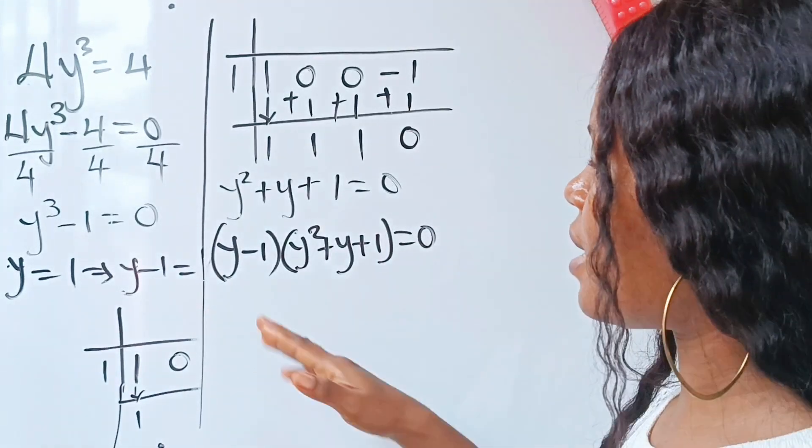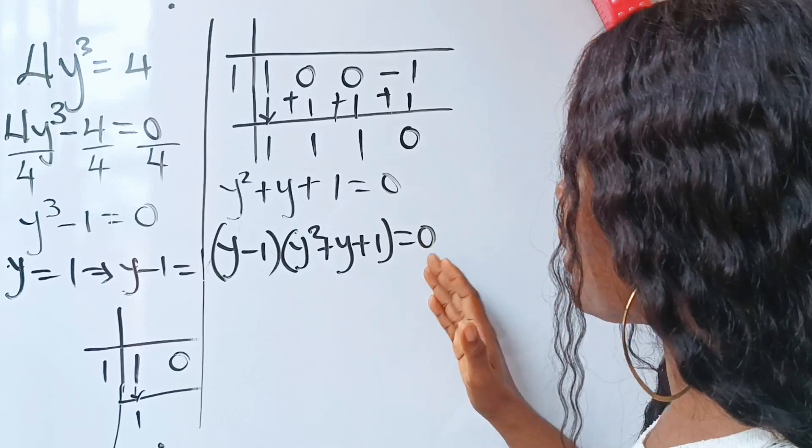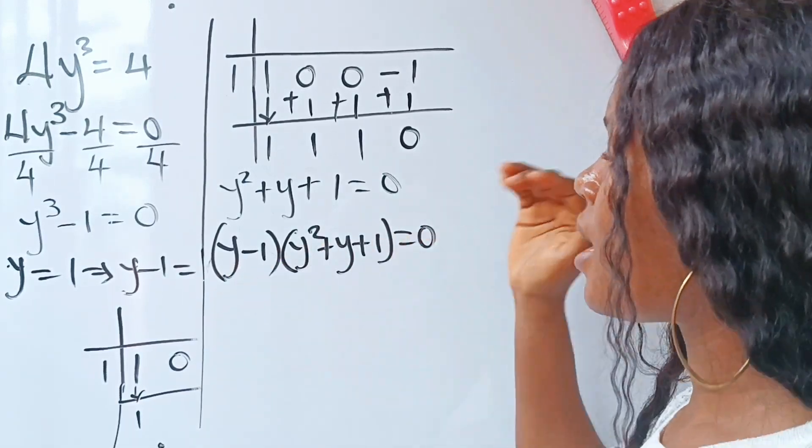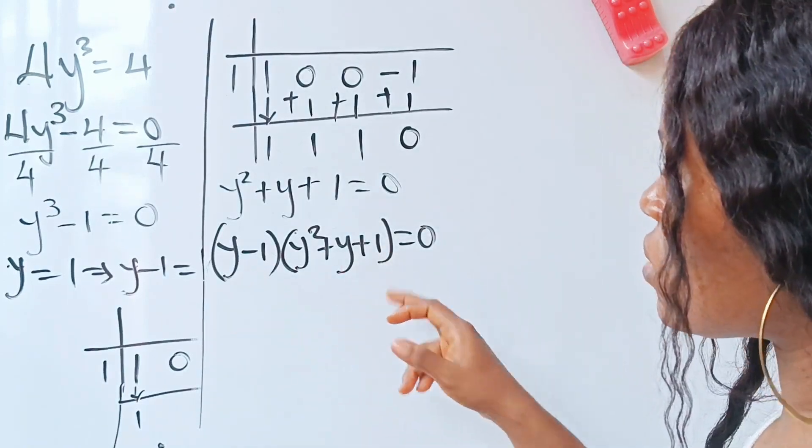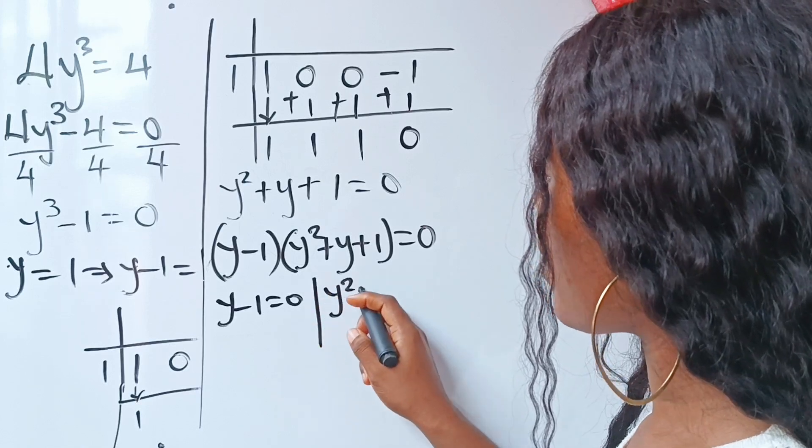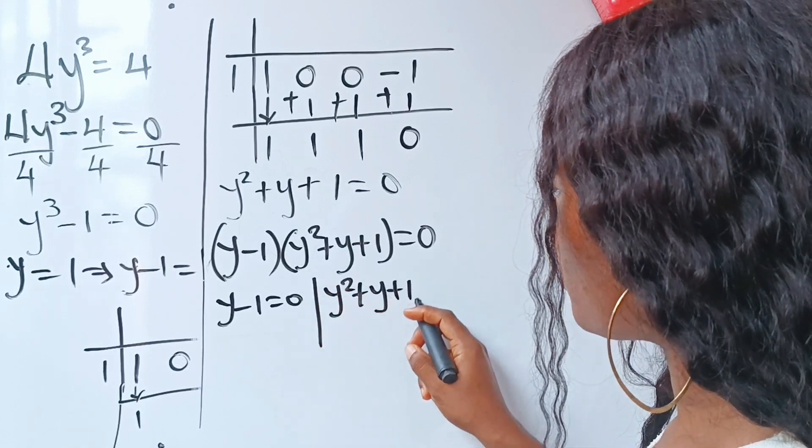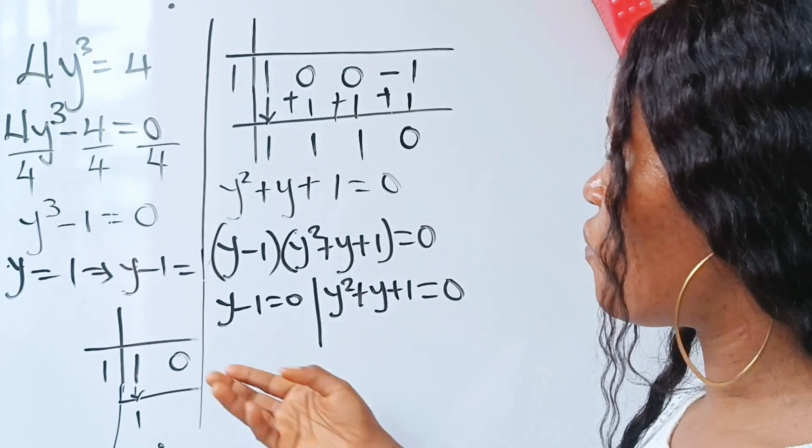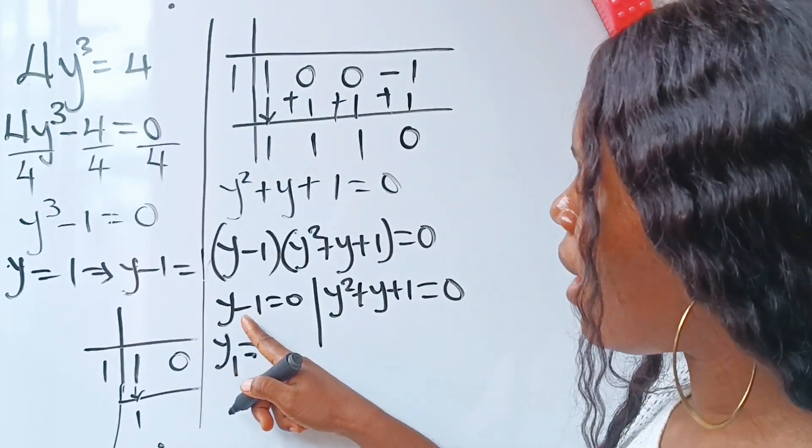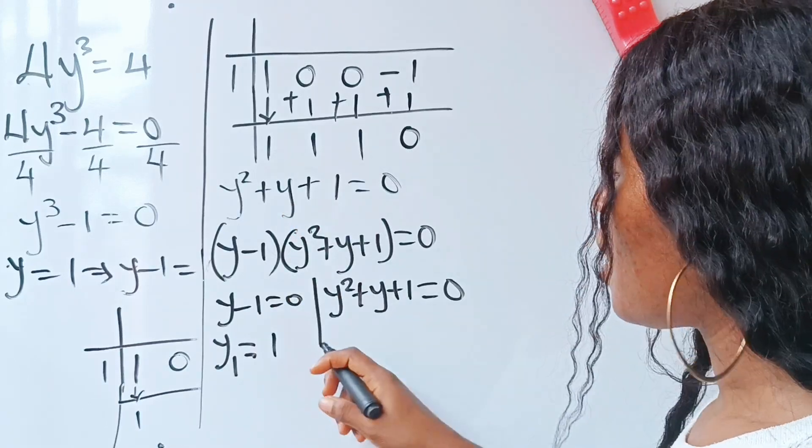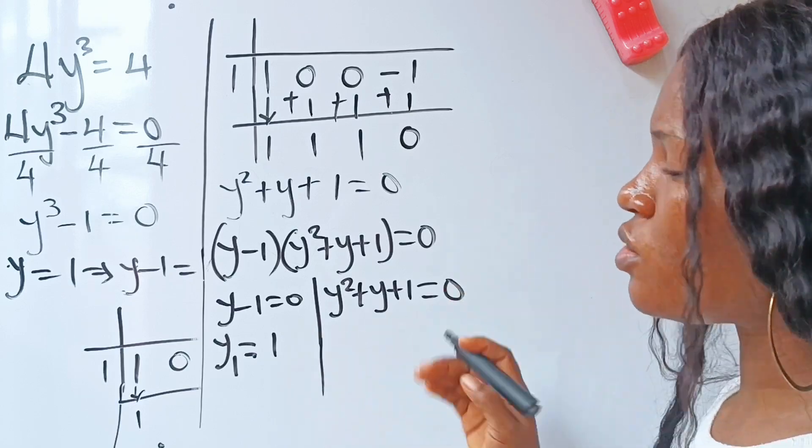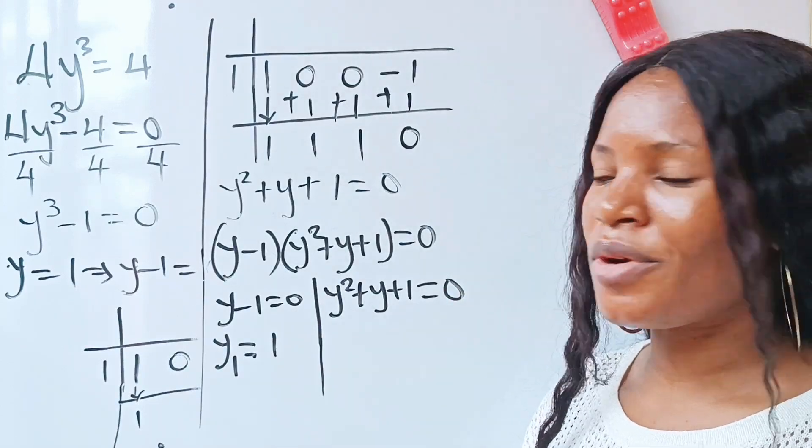Now from here, we can say that once two brackets are equated to be 0, it simply means that either of these brackets is equal to 0. So it's either y - 1 = 0 or y² + y + 1 = 0. If we solve this further, we'll get the first value of our y, which is equal to 1. Now here, if we solve this one, we are going to solve this using the quadratic equation formula.